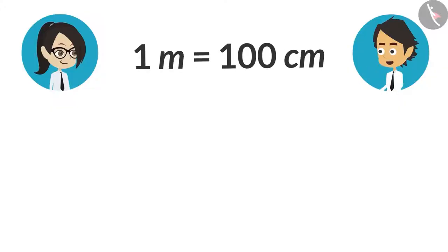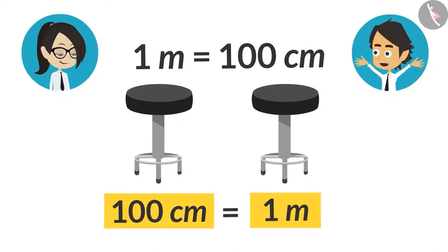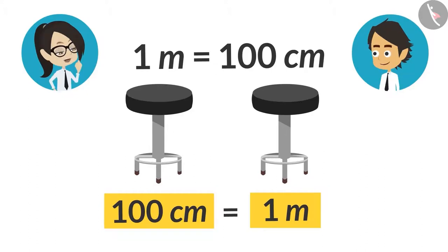One meter has 100 centimeters in it, which means when an object will be 100 centimeters, then it will be equal to one meter.